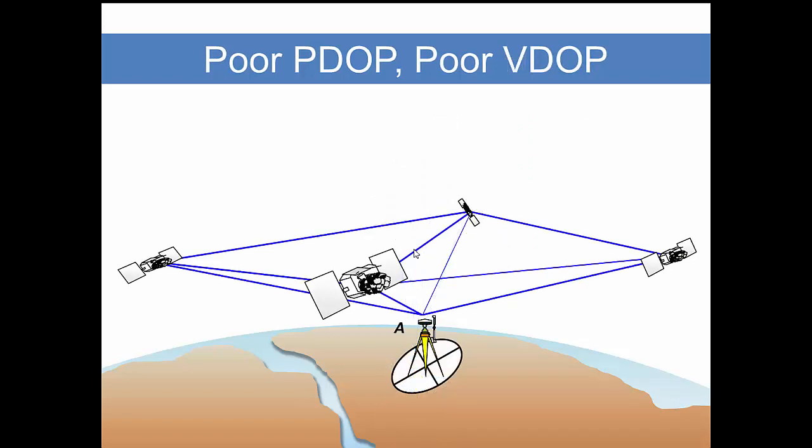By contrast, here we have a poor vertical dilution of precision when our satellites are scattered to the horizon, but we have none overhead. Again, we have a low volume of this three-dimensional shape. But here we can have good horizontal dilution of precision, because most of the lines that we are measuring from the satellites are fairly close to the horizontal plane.